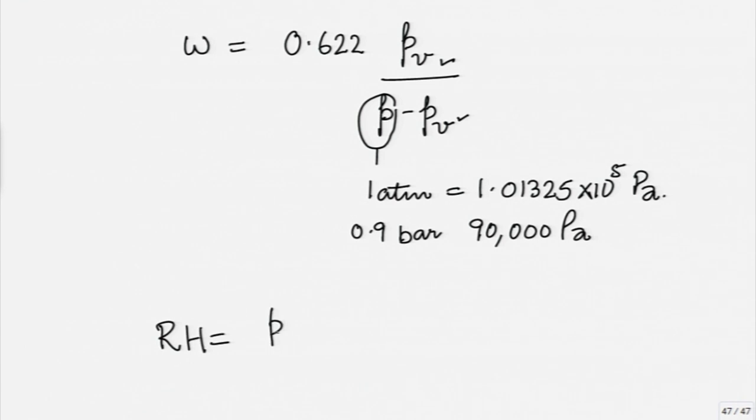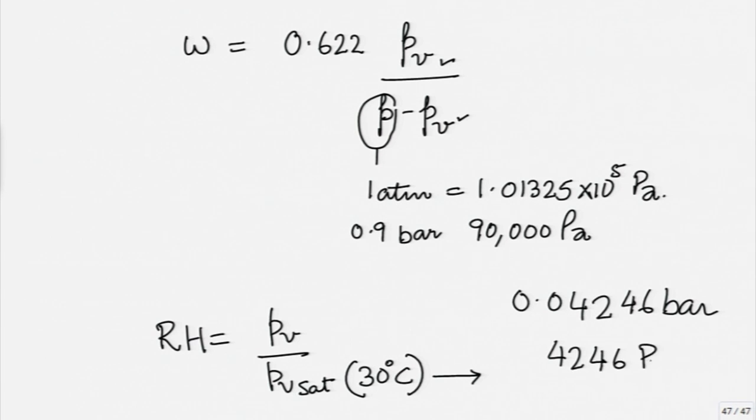Now, if I want the relative humidity, relative humidity is just PV by PV sat and PV sat is to be calculated at 30 degrees C. Again we go to the steam table, go to the temperature part of the steam table and we see that PV sat at 30 degrees C is 0.04246 bar or 4246 Pascal. This is just the ratio of 2339 upon 4246. It depends on the dry bulb temperature and PV and you will realize it has nothing to do with the total pressure at this time.